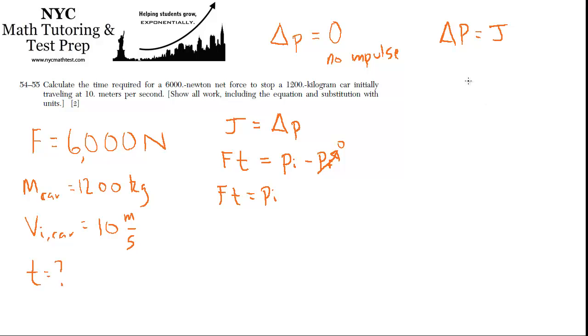And how do we express momentum? Well, in general, momentum is the mass times the velocity. So we can take this even a step further and say the impulse is equal to the mass times the velocity. And that velocity is the initial velocity of the car, because the final velocity is zero.